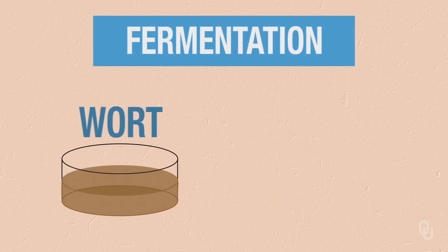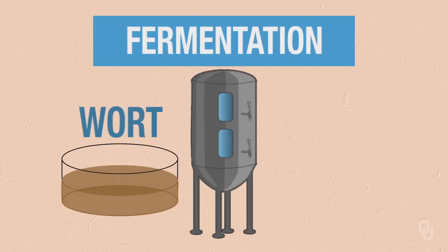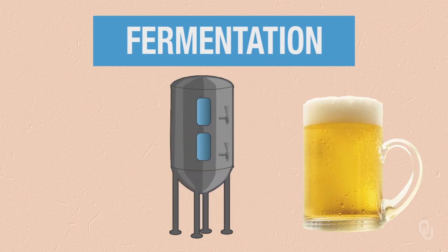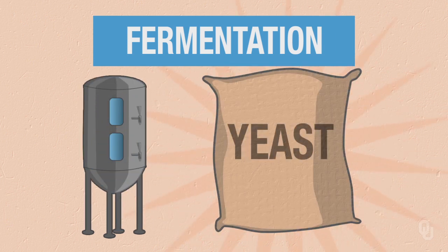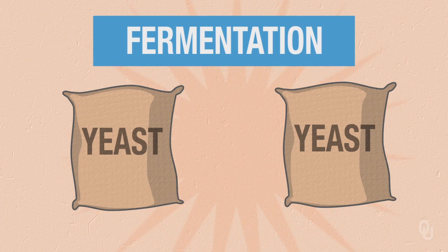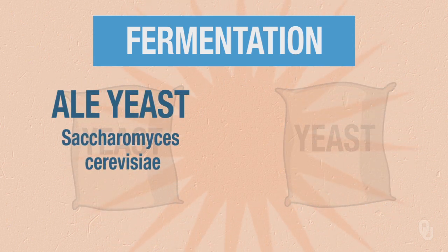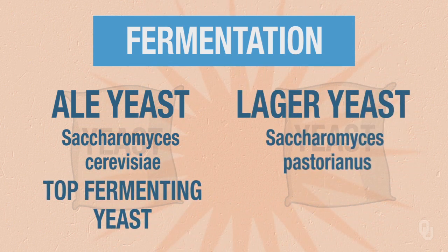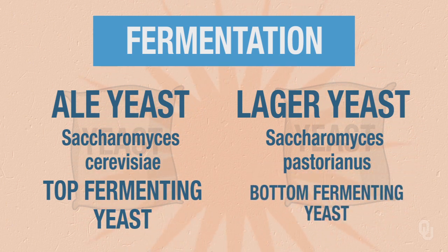Fermentation is going to be converting the malt-rich wort into beer. The organism that's going to do this for us is yeast. We have two main varieties of yeast. The ale yeast, Saccharomyces cerevisiae, is a top-fermenting yeast. In lagering, we have Saccharomyces pastorianus, a bottom-fermenting yeast.